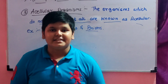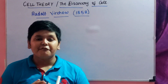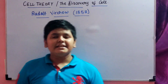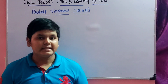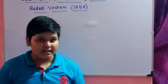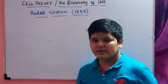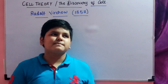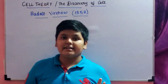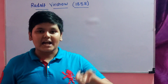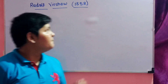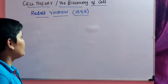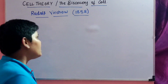Now let us discuss the cell theory and the discovery of the cell. There is a very interesting story behind how the cell was discovered. The main person who gave the points for the cell theory was Rudolf Virchow in 1858, though scientists like Schleiden also contributed starting from 1838. Rudolf Virchow gave three main points.